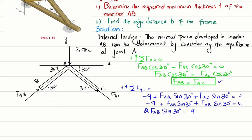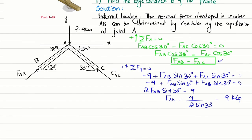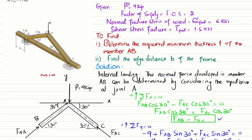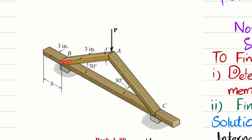From 2 × FAB × sin 30° = 9, solving gives FAB = 9 kips. Now we have the force in members AB and AC. Looking at the frame, due to this force FAB it will have two components — one along the x-axis and one along the y-axis — and this force will cause shearing in the region at joint B. Let me draw its free body diagram.